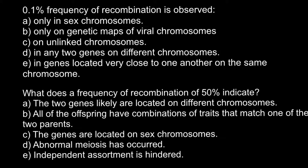Answer A: only in sex chromosomes. This is not the correct answer because sex chromosomes obey normal rules. If it is, for example, two X chromosomes, or X and Y chromosomes, then frequency of recombination would be zero because these two chromosomes are too different — their genetic makeup is very different and they are only homologous in a small part that allows them to line up and pair during meiosis.